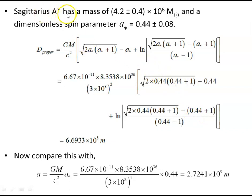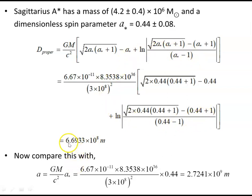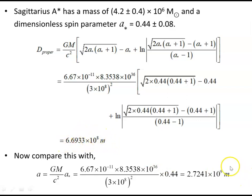Let's look at some examples. Sagittarius A*, the black hole at the center of our galaxy, has a mass of 4.2 million solar masses and a dimensionless spin parameter a* of 0.44 (plus or minus that error). Substituting a* and M gives a proper distance of 6.6933 × 10⁸ meters. Compare this with the coordinate value a = GM/c² times a*, which gives 2.7241 × 10⁹ meters. There's a clear difference — from 10⁸ to 10⁹.